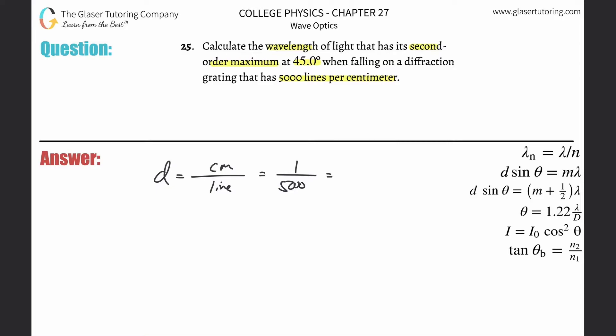So that's going to now tell me when I do the math there, one divided by 5,000 is going to be 2 times 10 to the minus fourth. Now this is 2 times 10 to the minus fourth centimeters now per line, or per slit.